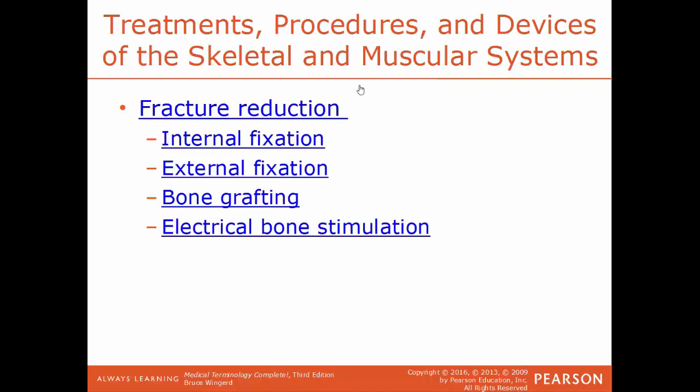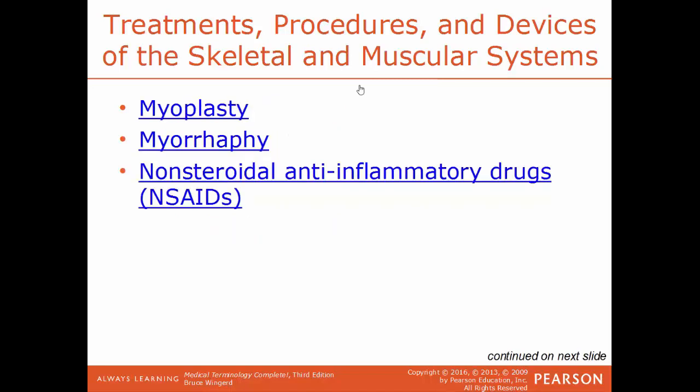Myoplasty is the surgical repair of muscle — myo always means muscle, plasty means surgical repair. Myorrhaphy is a suture within a muscle. NSAIDs (non-steroidal anti-inflammatory drugs) are very common pain relievers; common examples include aspirin, ibuprofen, and Aleve — all non-steroidal and anti-inflammatory drugs.